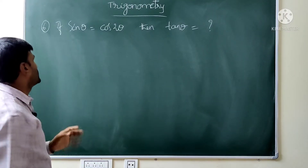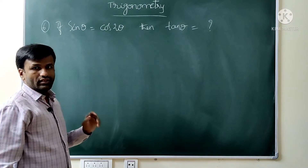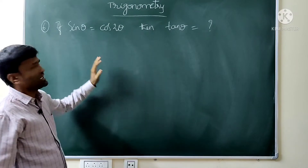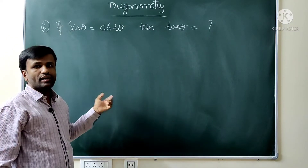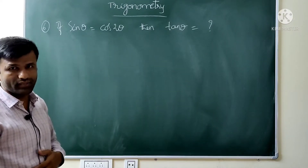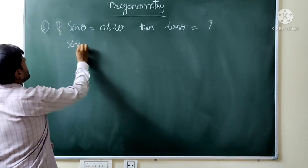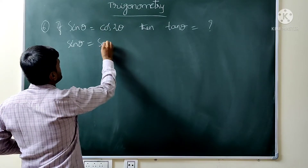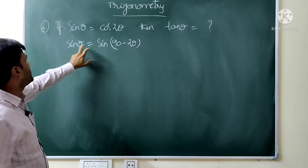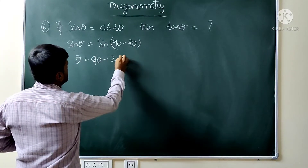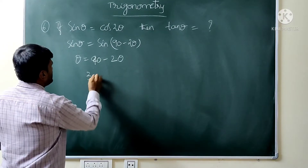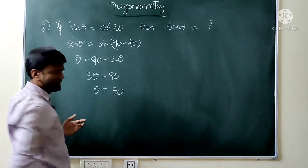Sixth question: if sin θ equals cos 2θ, then tan θ equals what? Sin θ = cos 2θ = sin(90 − 2θ). So θ = 90 − 2θ, meaning 3θ = 90 degrees. Cancel with 3: θ equals 30 degrees.